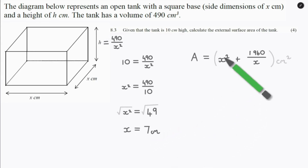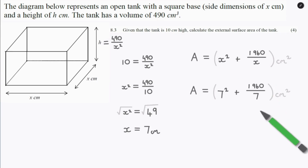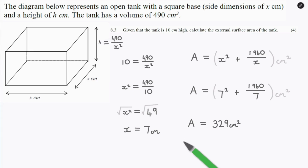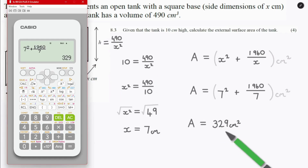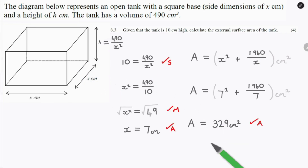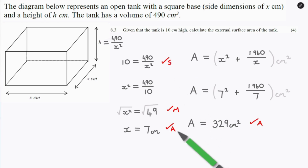We substitute x equals 7 into the surface area expression. That gives us a total external surface area of 329 centimetres squared — use your calculator to confirm this. Our four marks come from the following steps: substitution, manipulation, your answer for x, as well as the total external surface area.